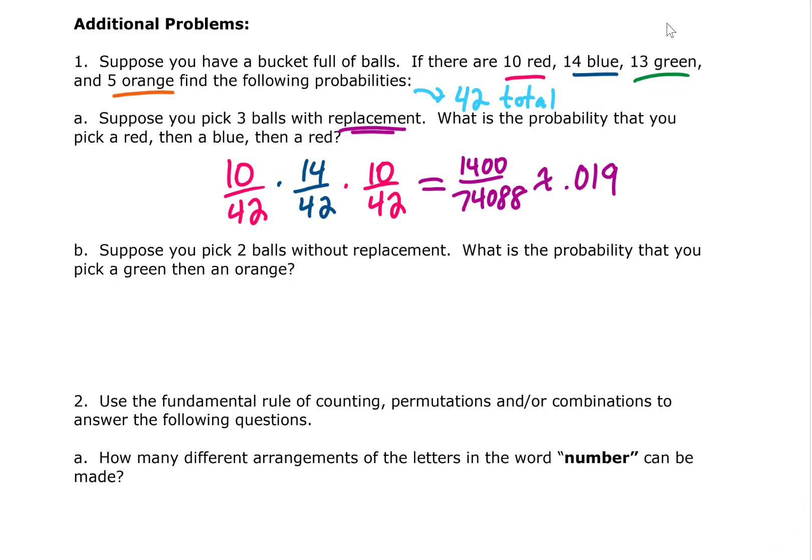The next problem is done without replacement. That means when we take a ball out of this bucket we don't put it back in. What is the probability that we pick a green ball and then after having done that we pick an orange ball? So green first, we have 13 green balls out of 42 total. Now that we've taken that green ball out, we have five orange balls left but only 41 left in the bucket total.